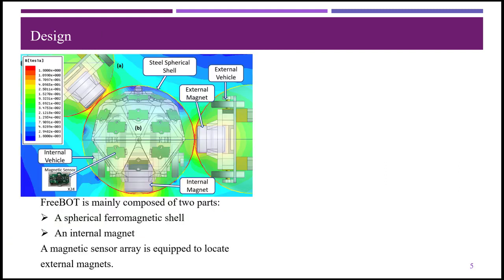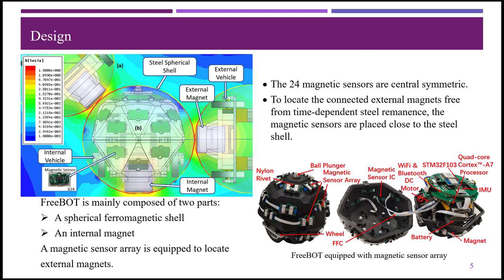A FreeBot contains a steel spherical shell and an internal magnet. A FreeBot can connect to other FreeBots by moving internal magnet and attaching to the steel spherical shell of other FreeBots. A symmetric magnetic sensor array consists of 24 magnetic sensors as designed to monitor the magnetic fields produced by the external magnets.